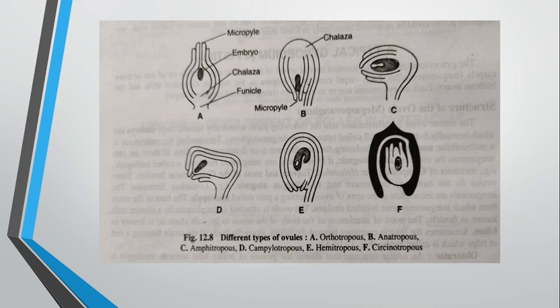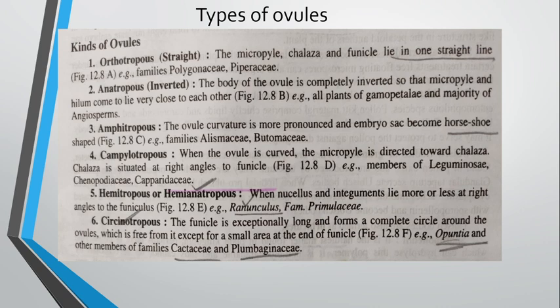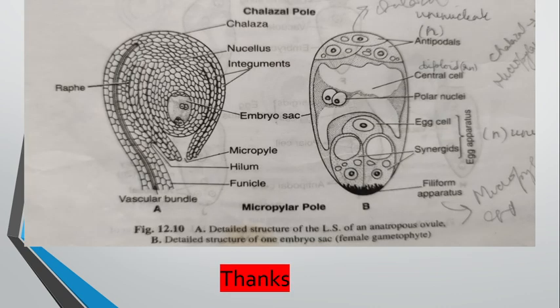The six types of ovule are: orthotropous, anatropous, amphitropous, campylotropous, hemitropous, and circinotropous. You can write down the names of these six types of ovules found in angiosperms. We will discuss each type and then look at some examples.